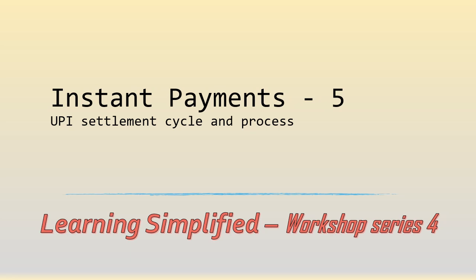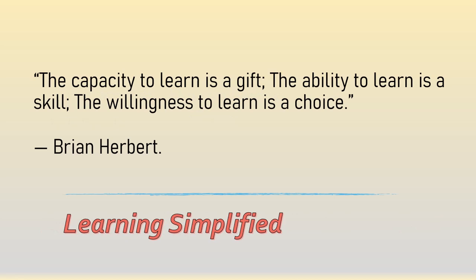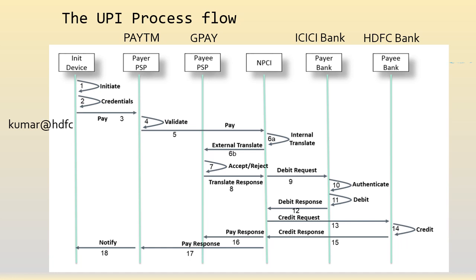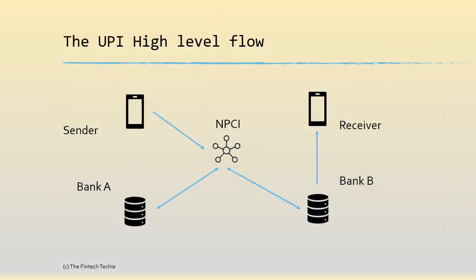Hi everyone, welcome back to the last video of the series on instant payments. In this video we are going to understand a little bit about the UPI settlement process — basically how the interbank settlement happens for UPI transactions. In one of the earlier videos we saw the detailed UPI process flow from the payer PSP to the payee PSP and finally to the beneficiary. We are going to revisit the high-level process flow again in the context of settlement between the remitter and beneficiary banks.